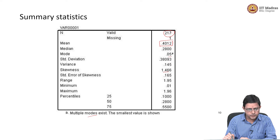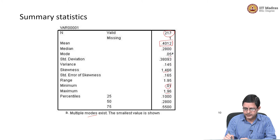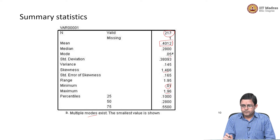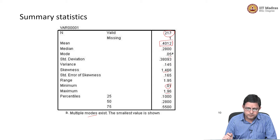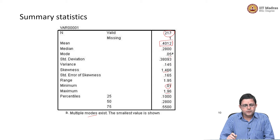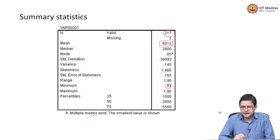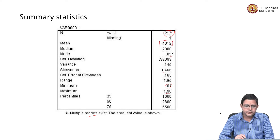Minimum is 0.01, maximum is 1.96. What clues can you pick up from this summary statistics? Because this is going to help us build or guess a distribution.